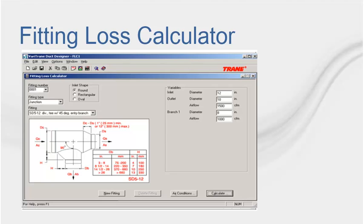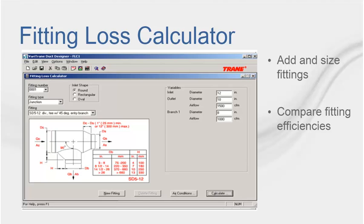There are two ways to use the Fitting Loss Calculator. The first is within Duct Configurator to add and size fittings within duct sections. In this case the applet opens a window labeled Fitting Input when you click on Add Inline in the sections worksheet. The second way is by itself to compare fitting efficiencies. To use the Fitting Loss Calculator this way, click on the Fitting Loss Calculator tab. Describe the fittings and applicable air conditions and the output will calculate the velocity and velocity pressure at the inlet and at the outlet, and the pressure drop and loss coefficient at each output.